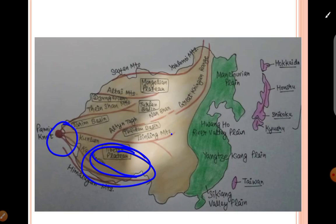The Gobi Plateau is located in Inner Mongolia and north-eastern China. This is the Mongolia Plateau region. It is a dry and cold plateau with an average height of 1500 meters.